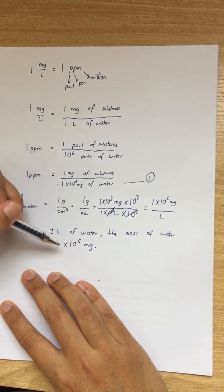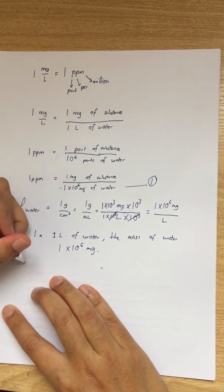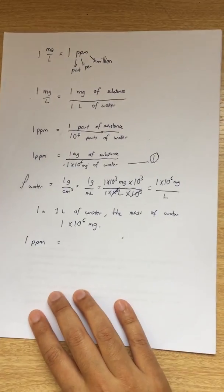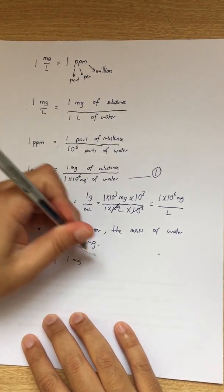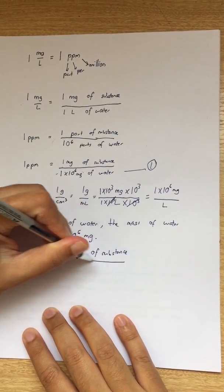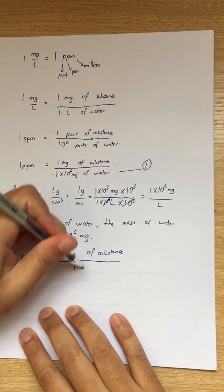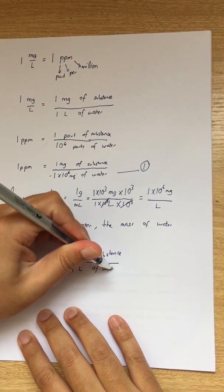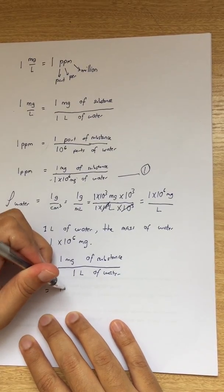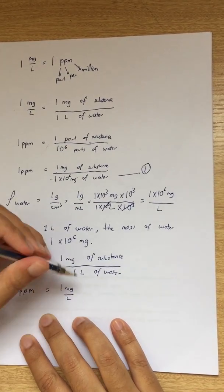So we just substitute one liter into this equation, so we will have one PPM is equal to one milligram of substance divided by one liter of water. Therefore, we manage to prove one PPM is equal to one milligram per liter.